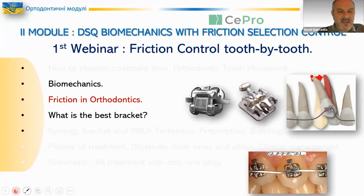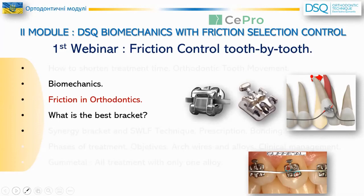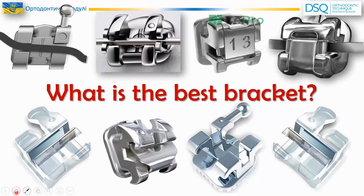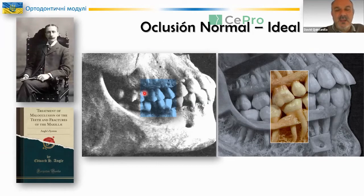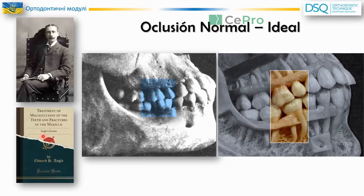The next question is about friction, biomechanics, and what is the best bracket. It's very important to understand the evolution of the brackets. Remember that Angle was the father of modern orthodontics. Angle published the famous treatment of malocclusion of the teeth and fractures of the mandible — this is the Angle system. To talk about the best brackets, we will refer to the history of brackets and how they transformed over time.